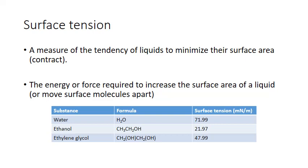Ethylene glycol is about the same size as ethanol, but it has two OH groups compared to ethanol's one, and as a result the surface tension goes up. So the stronger the intermolecular force strength, the higher the surface tension.